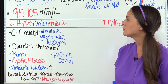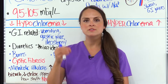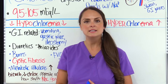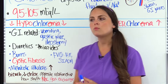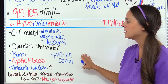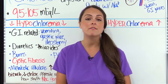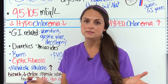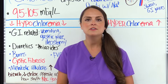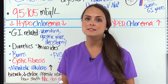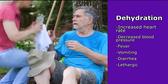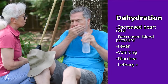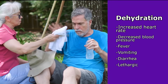The reason metabolic alkalosis drops chloride is because bicarbonate and chloride have an opposite relationship, particularly in how they shift in and out of the red blood cell to help with proper gas exchange. The signs and symptoms of hypochloremia don't have their own specific ones — they typically overlap with hyponatremia. You may see dehydration signs with increased heart rate and decreased blood pressure, fever, vomiting, diarrhea, or being lethargic.